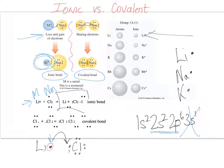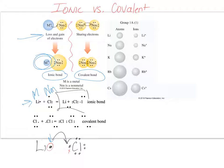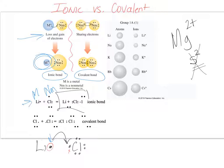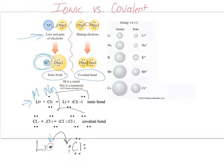Magnesium is a 2+ ion because it's in the second column — its s-block outermost configuration is s2. It can find six electrons or give its two outermost away. Giving two away is easier, leaving it with a filled highest level. With two more positive protons than negative electrons, the overall charge is 2+.